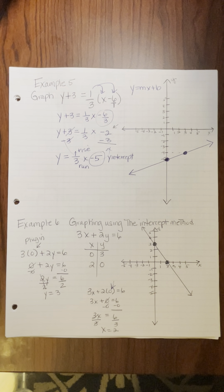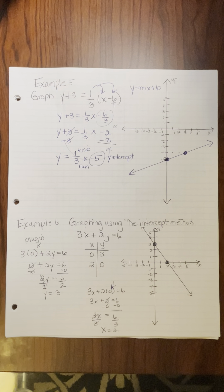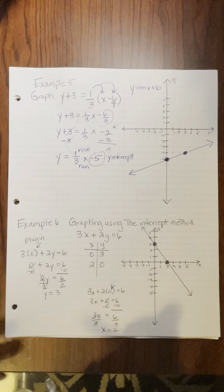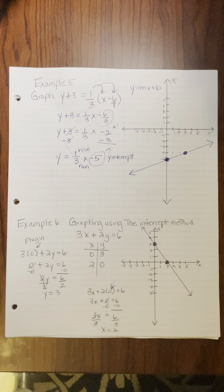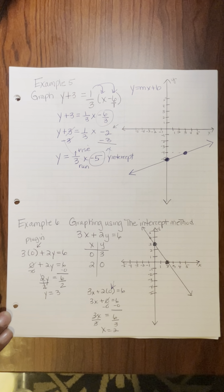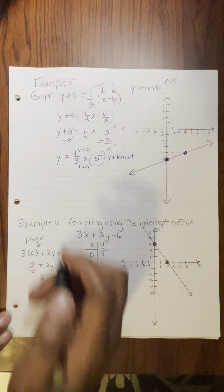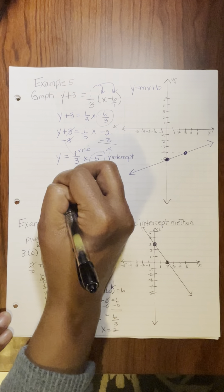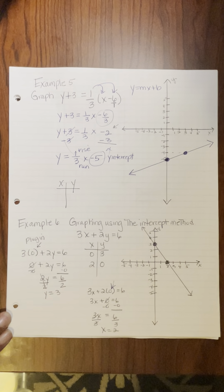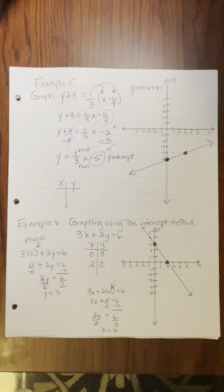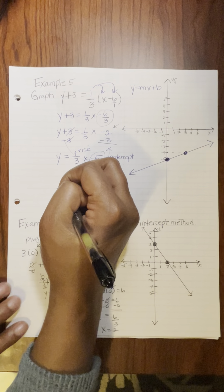If you want to do the intercept method and you did not want to do the slope-intercept form, or you didn't want to do the x and y table, here's an easier x and y table called the intercept method. In example 6, I gave you 3x plus 2y equals 6. So I have an x and y table, and maybe you didn't want to do negative 1, 0, and 1 — you can do what they call intercept.